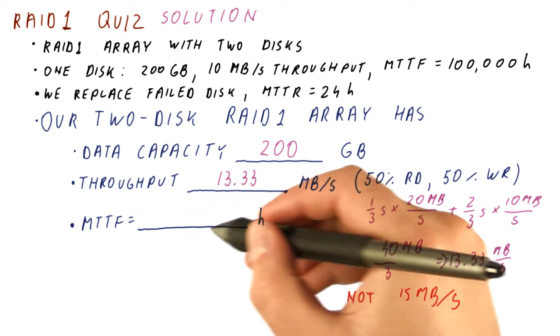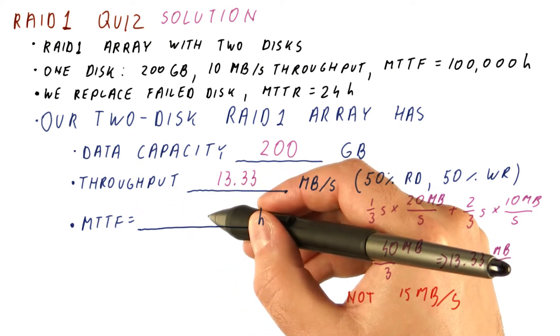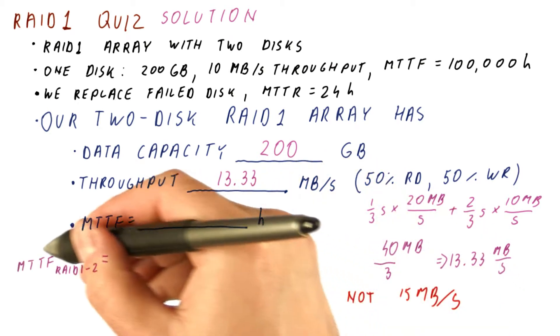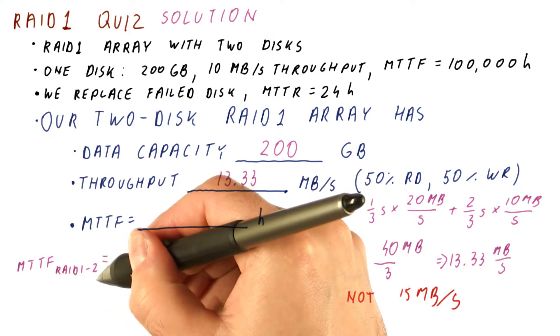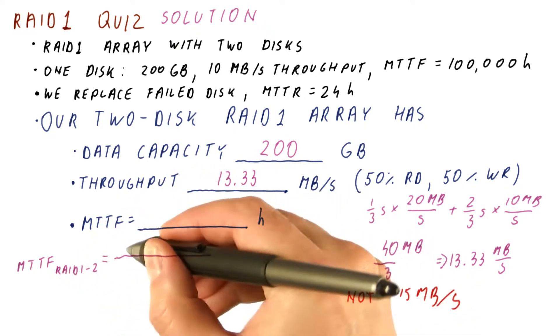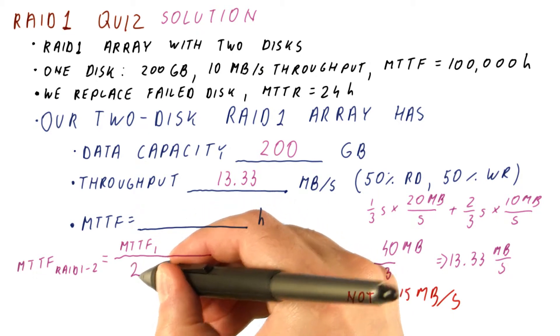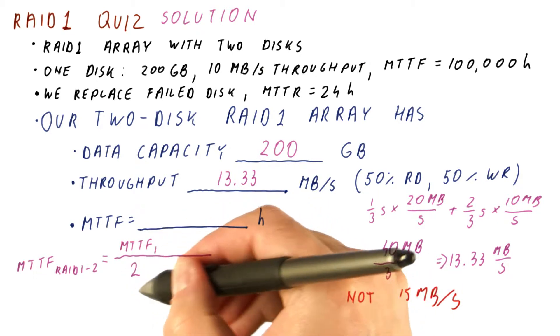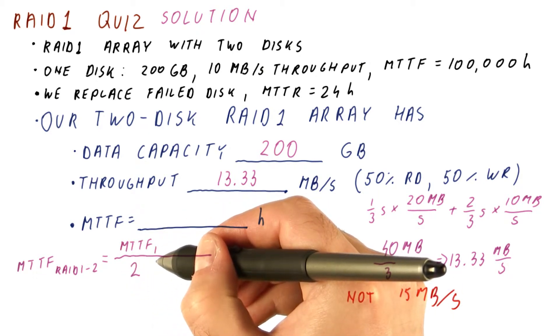And finally, let us figure out the MTTF for the entire RAID1 array. The MTTF of a whole RAID1 array with two disks is equal to the MTTF of a single disk divided by two. So this is how long we have to operate with two disks until one of the disks fails.